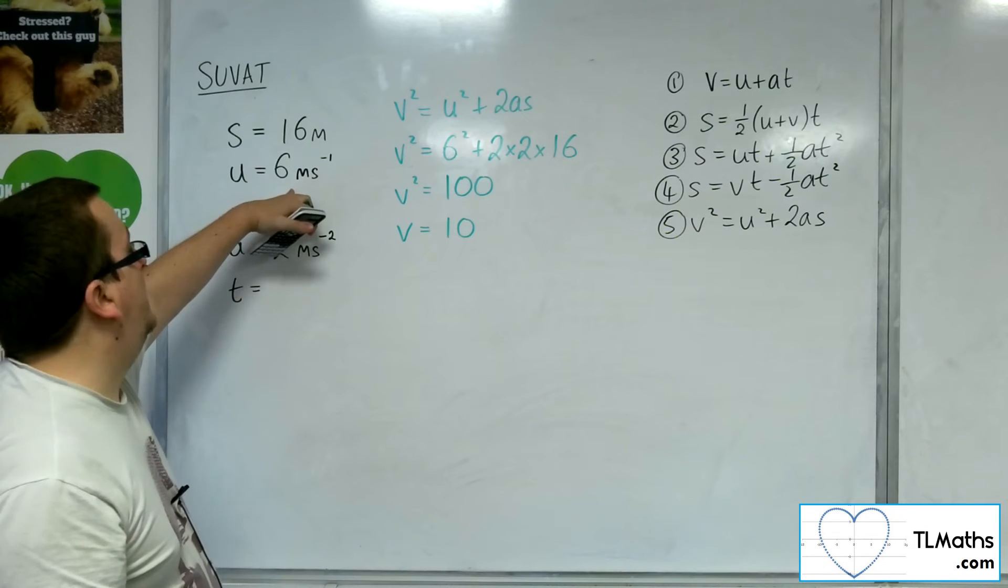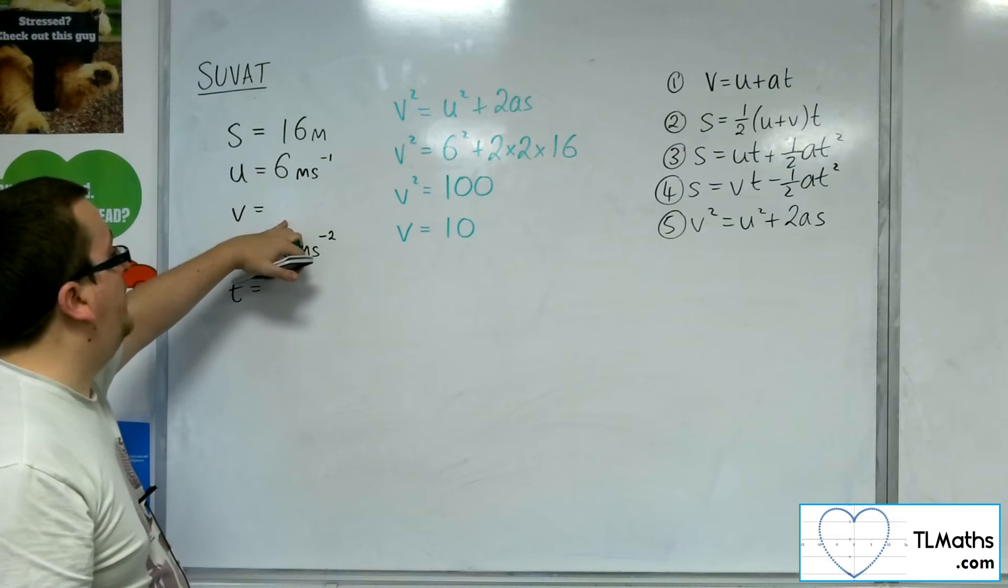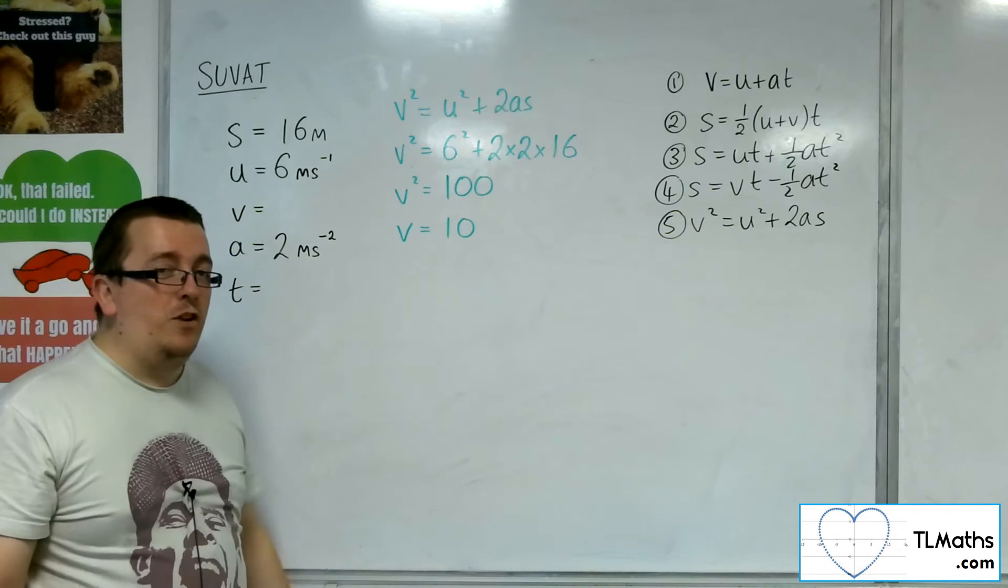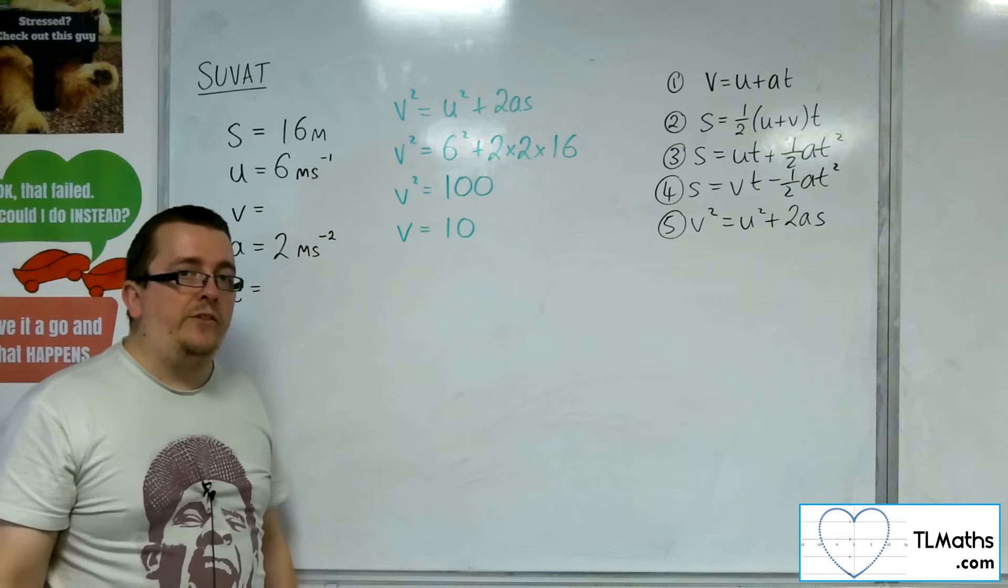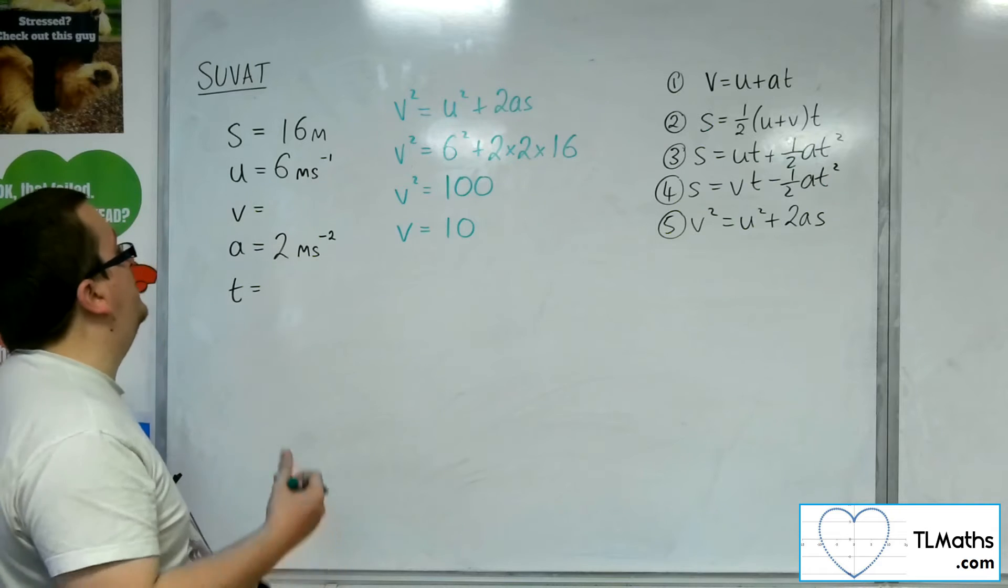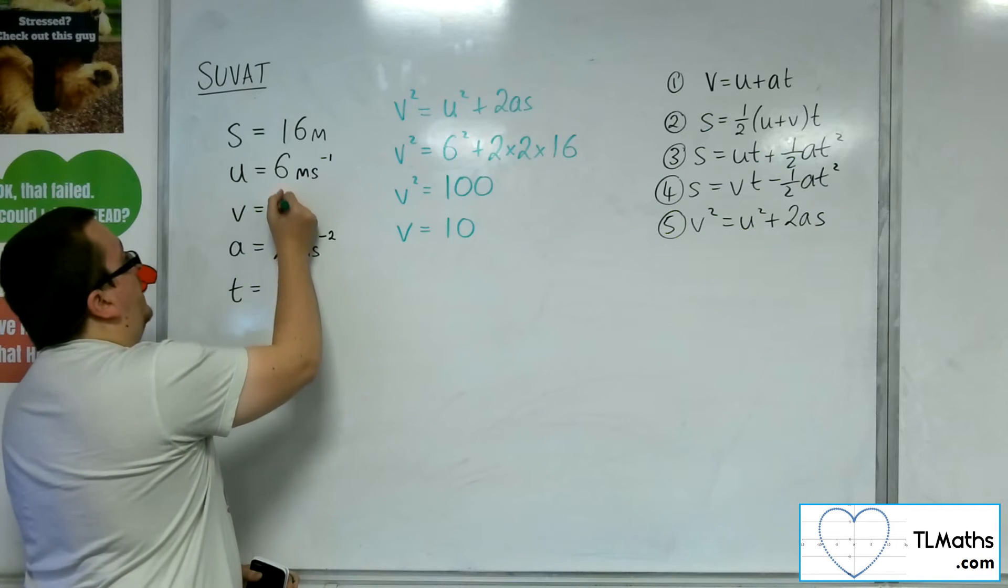I'd gone from 6 meters per second to minus 10 meters per second. But I would have been accelerating at 2 meters per second. That doesn't make any sense. The acceleration would have had to have been negative as well. So v has to just be the 10 meters per second.